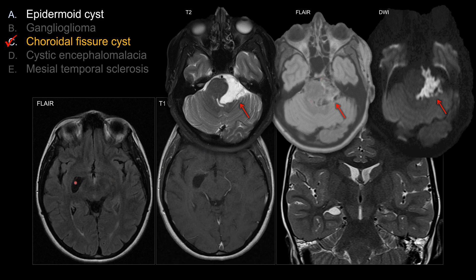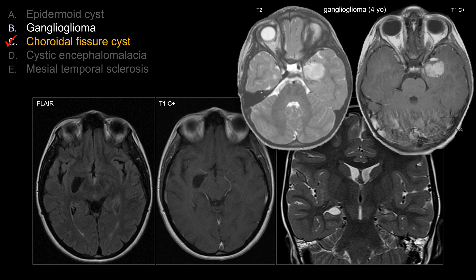Unlike a choroidal fissure cyst, which should follow CSF signal intensity in all sequences, an epidermoid cyst shows incomplete FLAIR suppression. Classically, epidermoid cyst also shows restricted diffusion, whereas a choroidal fissure cyst should not. Choice B is ganglioglioma.